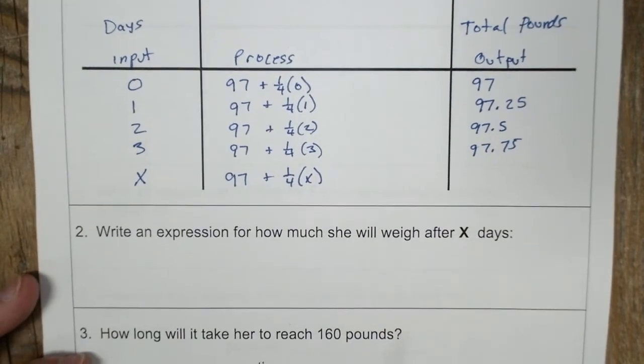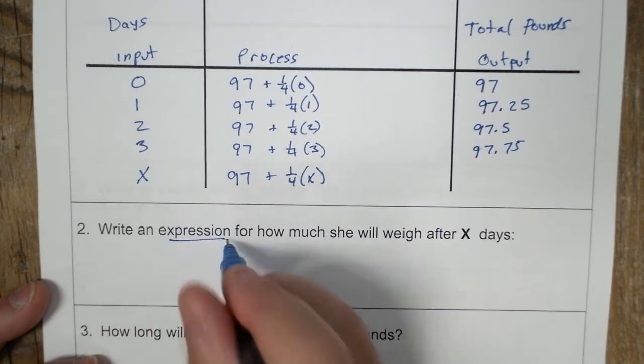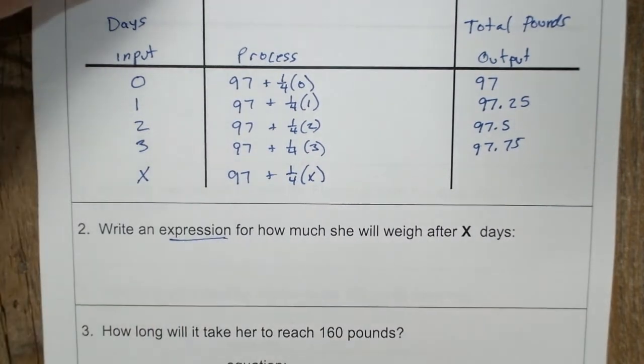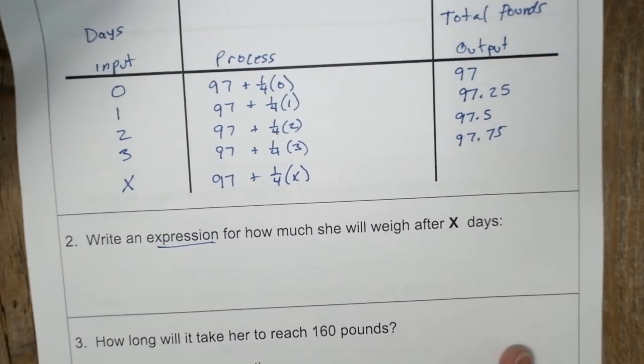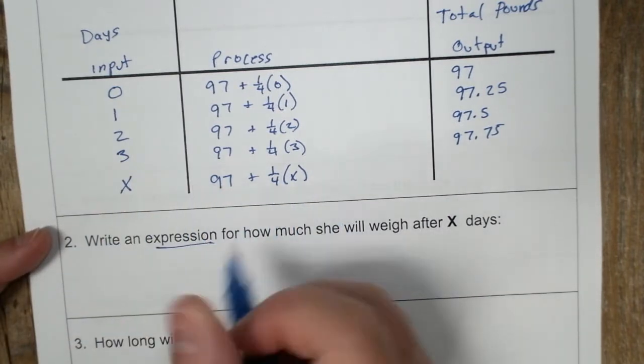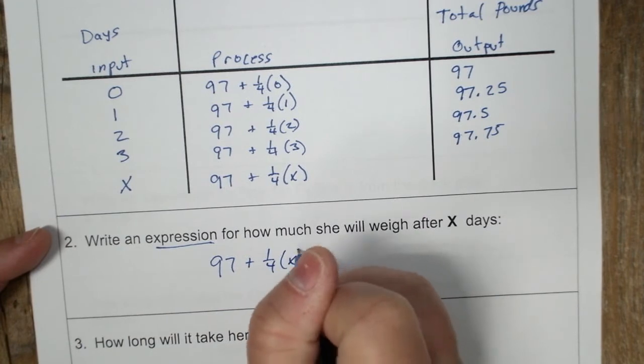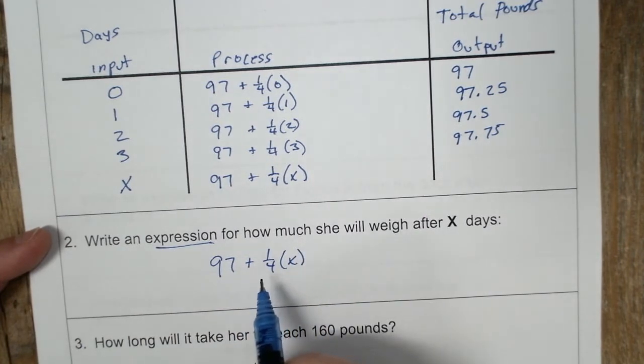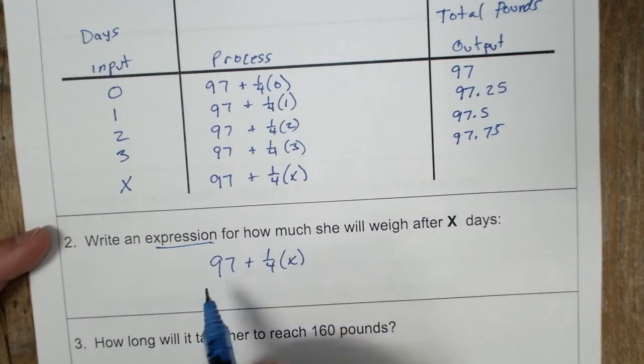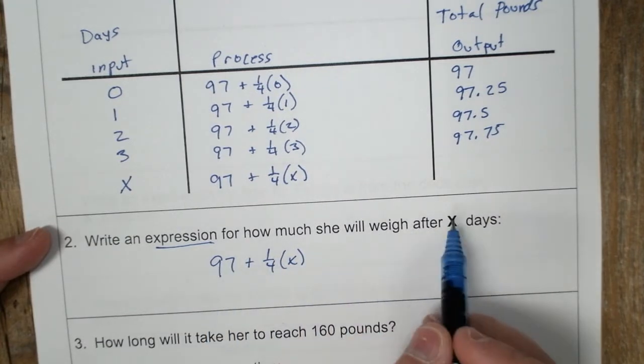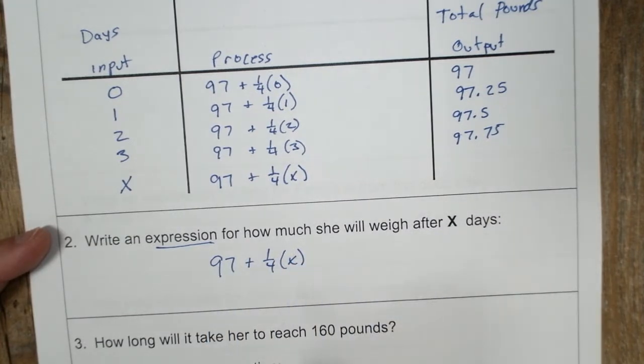So it says, write an expression for how much she will weigh after X days. Well, we've already done it in our table. And this would be 97 plus one fourth times X. The expression is what will help us find any amount given any input to find an output.